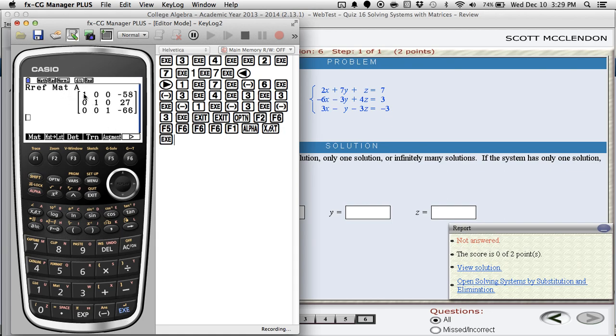Hit enter, and now it'll tell you what the answer to the system is. X says there's a 1 right here in the very first column. You see how the X's were in the first column. So X equals negative 58. Y is in the second column, and there's a 1 right here in the second column. So Y equals 27.